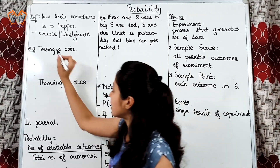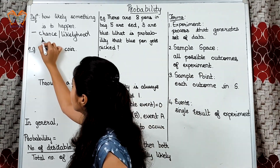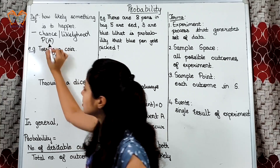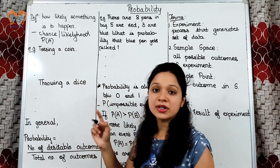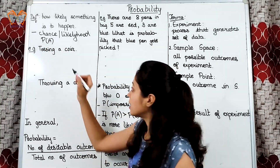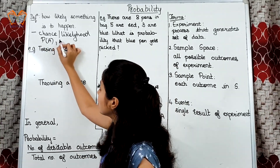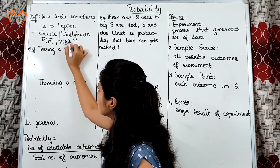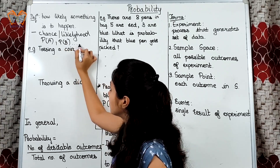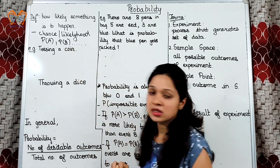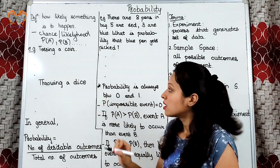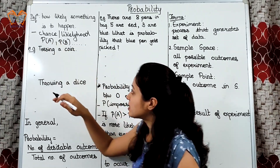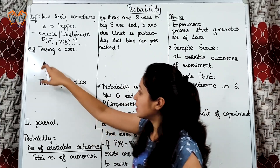It is basically denoted as P of A, that means probability of event A, or P of B, and so on. This is all about the basics of probability.